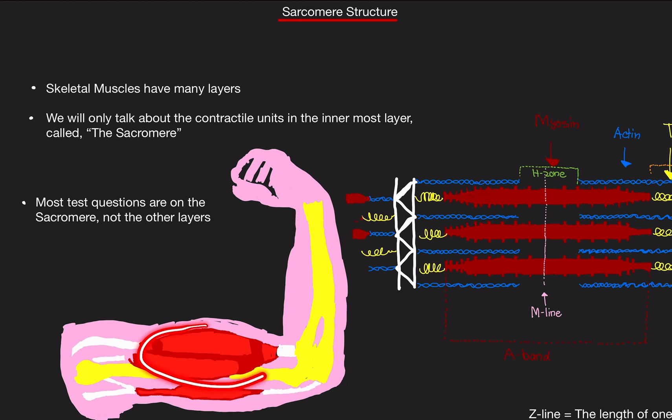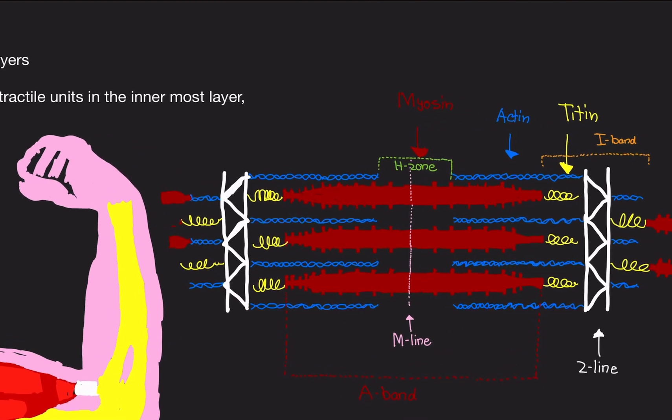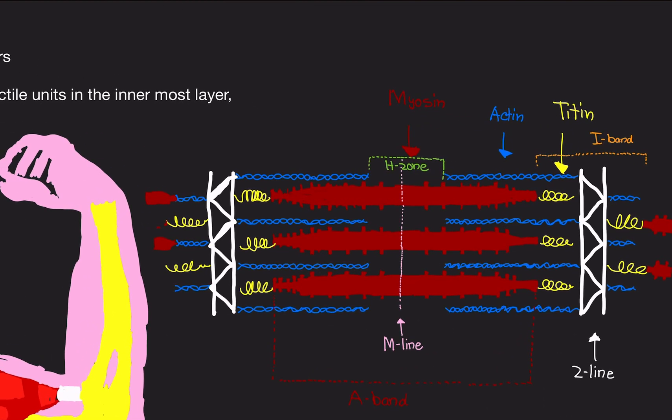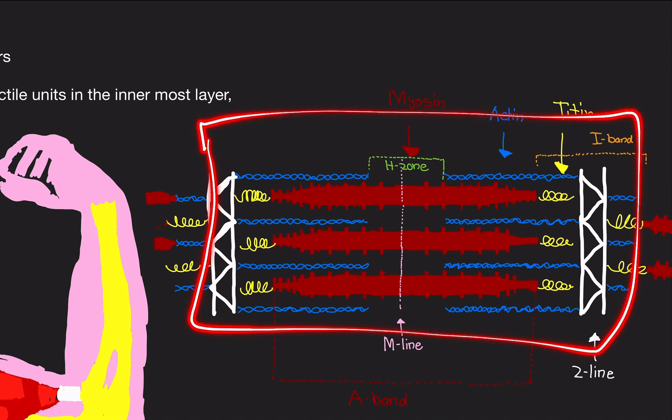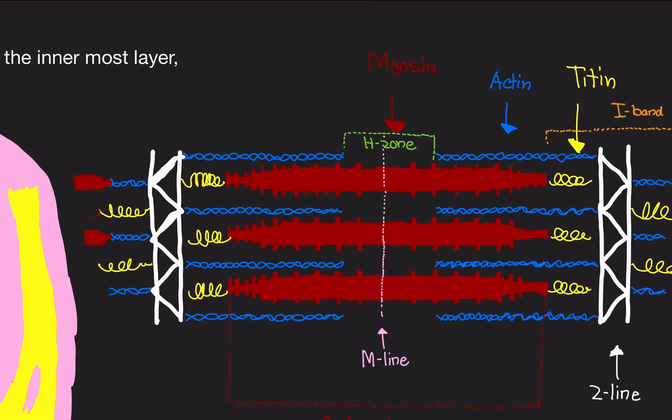So inside the muscle, the innermost layer, if you're going to basically chop it up and look inside, would be the myofibril. And if you take a microscope, you would see that the myofibril are made up of sarcomeres, which is this diagram here. It may look a little confusing. Don't even worry about it. We're going to go over it pretty slowly.